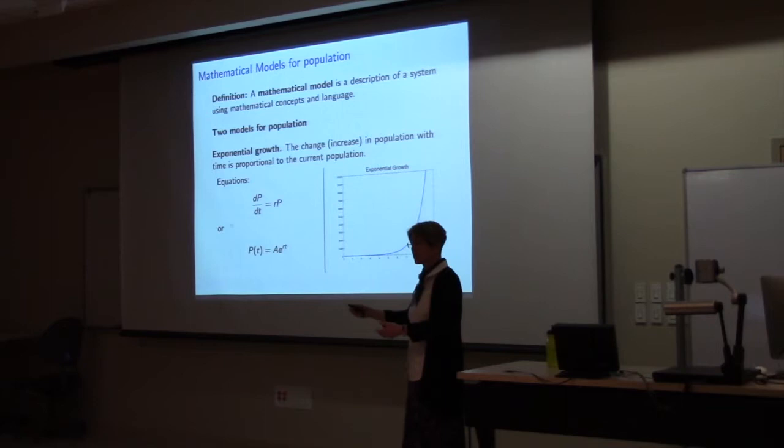This equation says the change in population with respect to time is equal to some constant times the current population. So the number of new human beings we get is proportional to the number that we have. This can be solved, and an exponential growth curve looks like that.